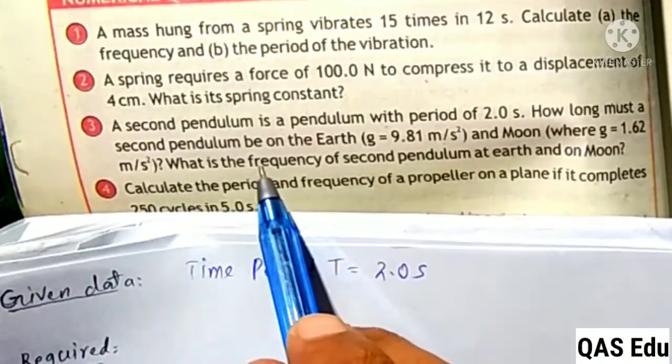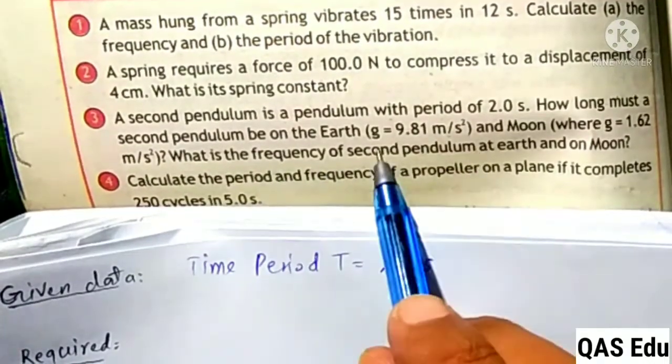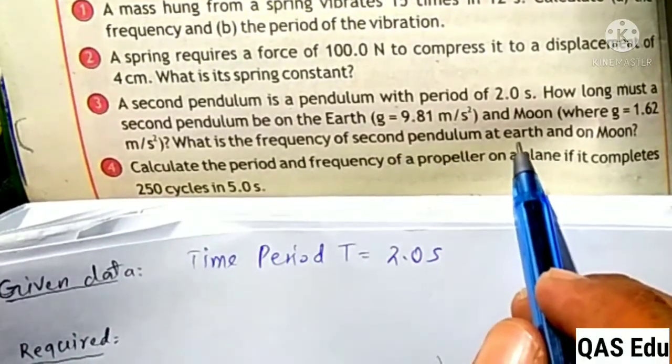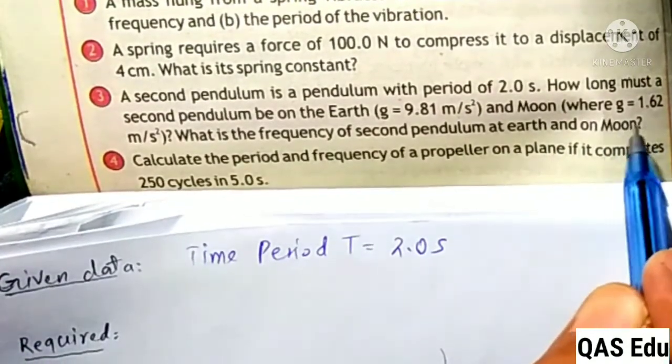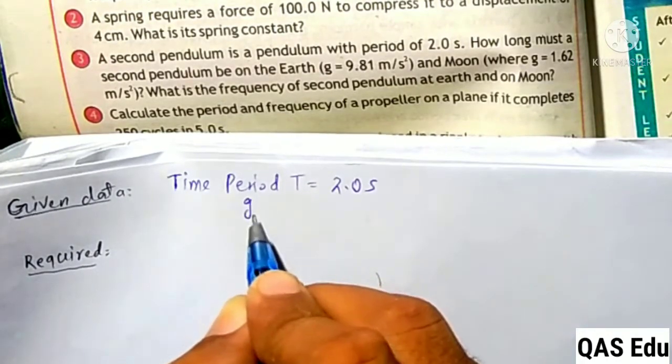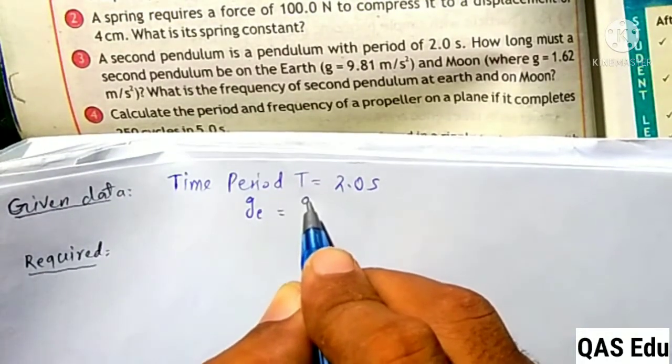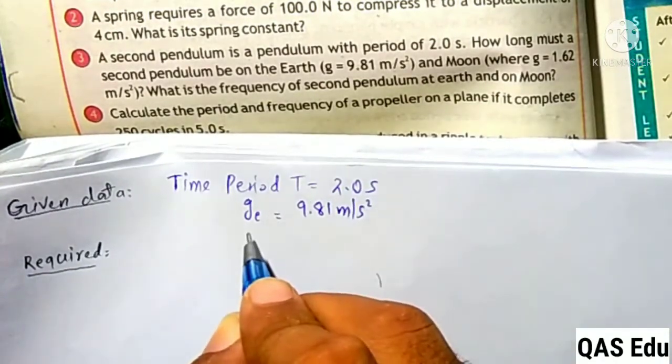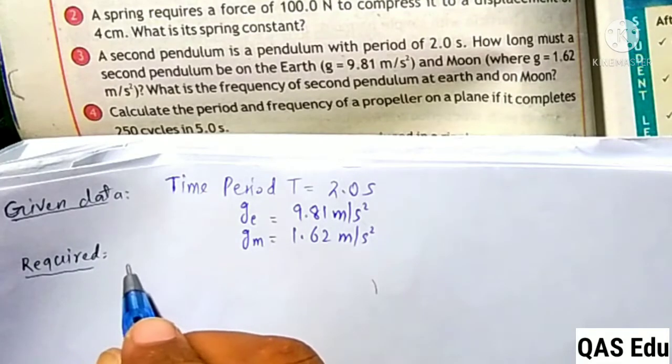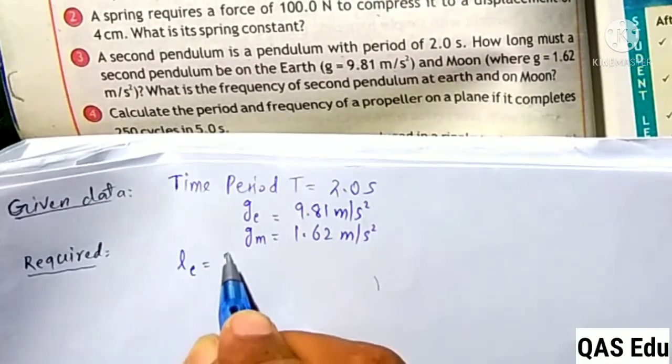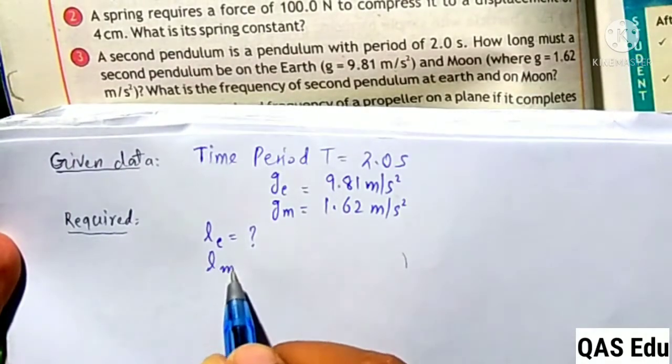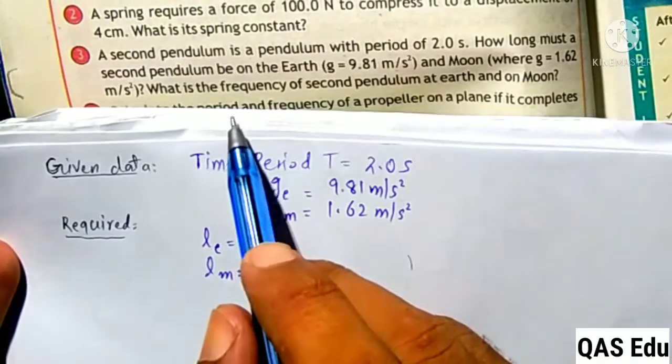The second pendulum on the Earth - we have the gravitational acceleration value 9.81 meters per second squared. And on the Moon, the second pendulum where g is equal to 1.62 meters per second squared. G on Earth is 9.81, g on Moon is 1.62.